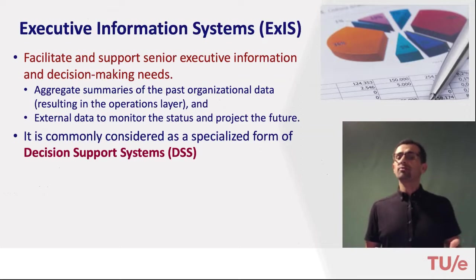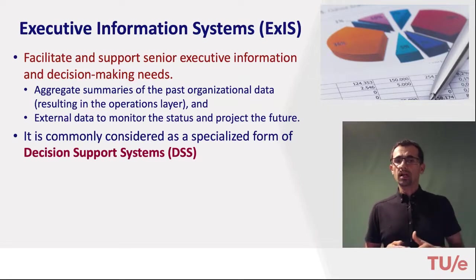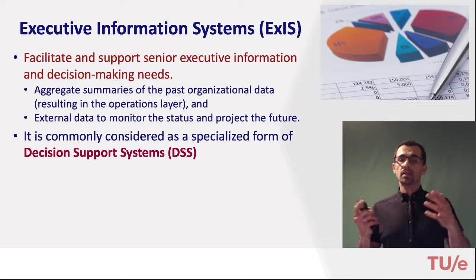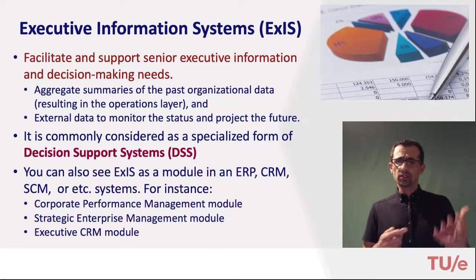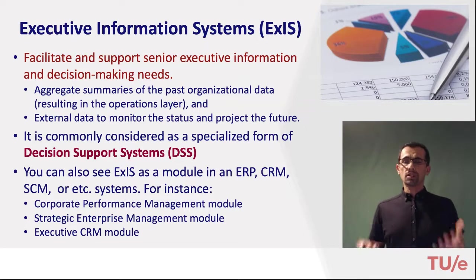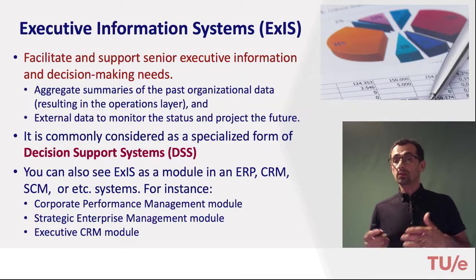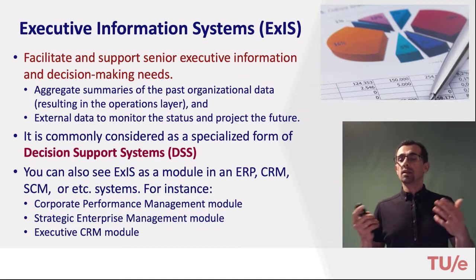To fulfill information needs at higher levels, we have executive information systems. These systems facilitate and support senior executive information and decision making by aggregating summaries of past organizational data from the operational layer and possibly external data, to monitor status and project the future with the aim to improve strategy and planning. They are commonly considered a specialized form of decision support systems, and can appear as modules in ERP, CRM, or supply chain management systems under names like corporate performance management or strategic enterprise management.